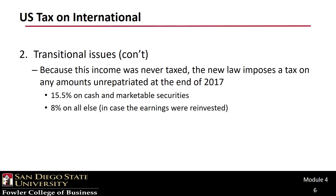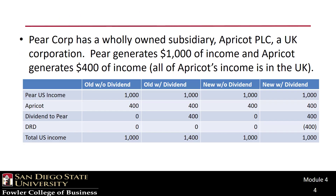This tax is going to apply whether the funds are repatriated or not. So the expected reaction is that U.S. firms will just go ahead and bring the money back, since deferral is no longer available for those old earnings. If you flip back to column one in our Pear and Apricot example, the $400 of Apricot earnings are finally being taxed.